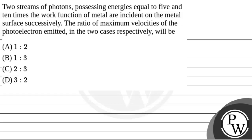Hello, let's read the question. The question says that two streams of photons possessing energies equal to 5 and 10 times the work function of metal are incident on the metal surface successively. The ratio of maximum velocities of the photoelectron emitted in the two cases respectively will be?